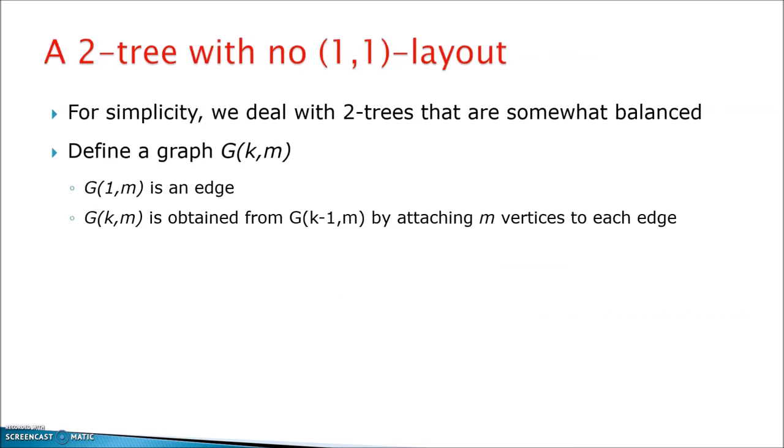Here, for the proof, we are going to use a bit more balanced class of these 2-trees. We define a graph G(k,m) so that G(1,m) is an edge, whatever is m, and then G(k,m) is obtained from G(k-1,m) by attaching m vertices to each edge. So m is the size of the attachments at each level, and k is the number of levels of this graph.